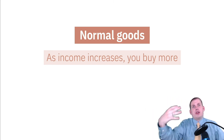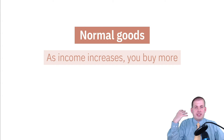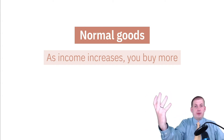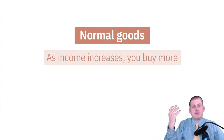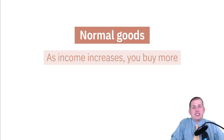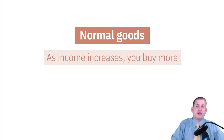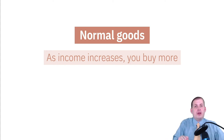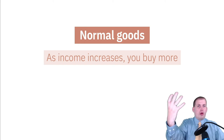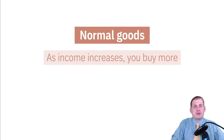You're going to increase your consumption of food to a point — it's not like Bill Gates is spending the same proportion of his money on food now that he was when he earned normal amounts. There are limits to those changes, but in general a normal good means if it becomes more expensive you buy less, if it becomes cheaper you buy more, and as your income increases you buy more; if your income goes down you buy less.